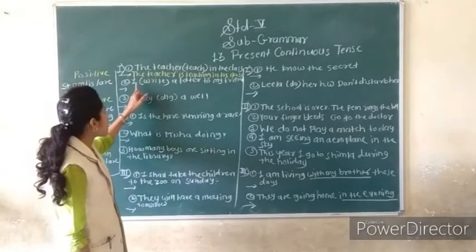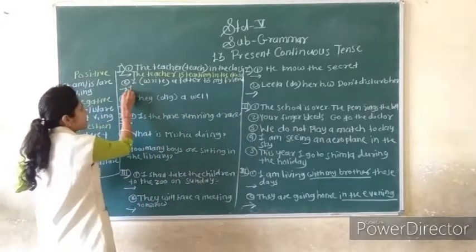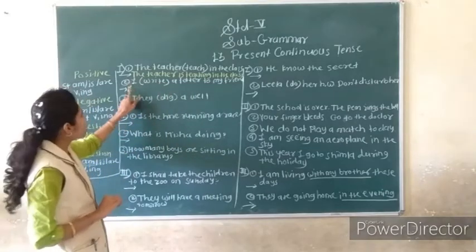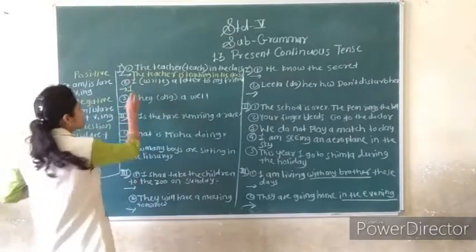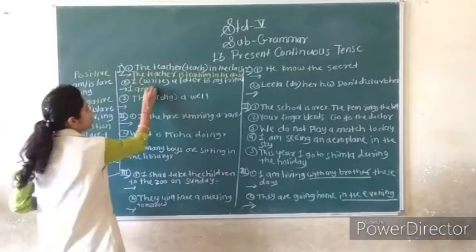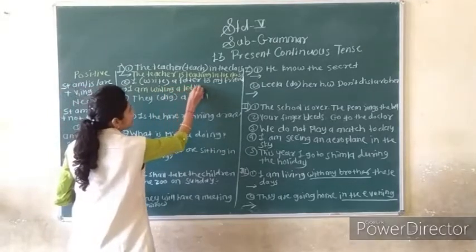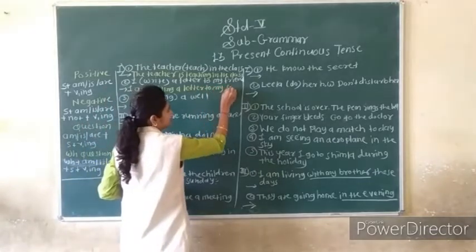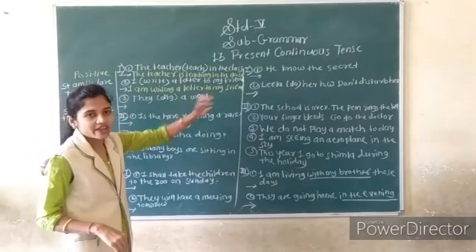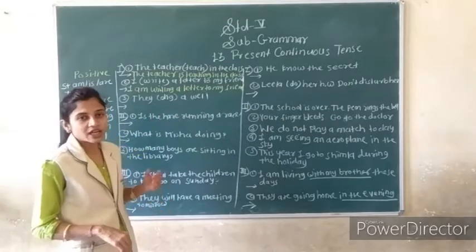Second sentence: I write a letter to my friend. After 'I' you use 'am'. So you write: I am writing a letter to my friend. Do you understand? Question: I write a letter to my friend. Answer: I am writing a letter to my friend. Like this you can solve that.